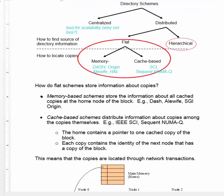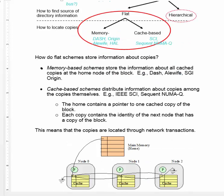Cache-based schemes, instead of keeping the information at one node, distribute the information among the copies themselves. The home contains a pointer to the first cache on a linked list of caches that have copies of the block, and each cache has a link to the next one. As shown in the diagram, the home node links to the first cache, the first to the second, and so forth. There are also links in the reverse direction, so given any particular copy, you can find all the other copies.